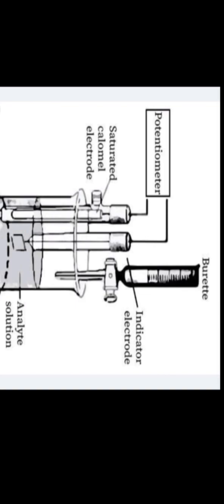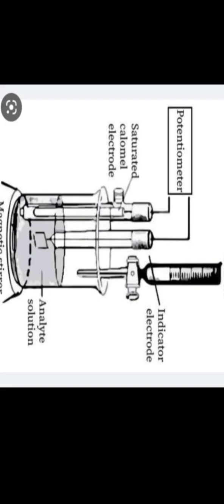Looking at the setup: in the beaker we have the analyte solution of known volume but unknown concentration. We need to find the unknown concentration. The burette holds the titrant of known volume and known concentration. We have the indicator electrode and the Saturated Calomel Electrode (SCE) as the reference electrode. In labs we have digital monitoring to connect and read the concentration.